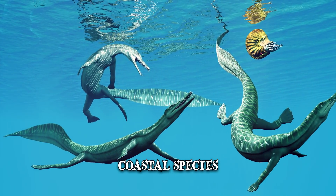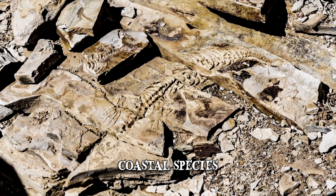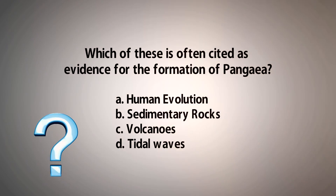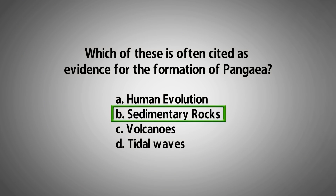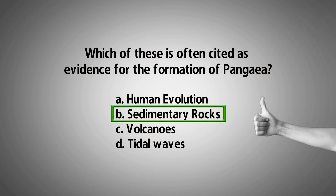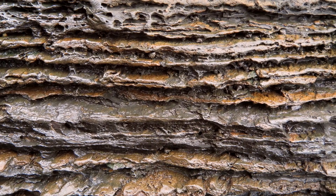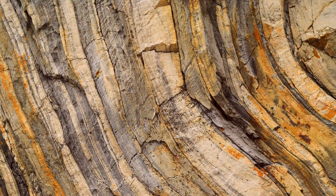Unfortunately for its flourishing species, Pangaea's existence overlapped with one of the most catastrophic events in the history of life on this planet. As for the often-cited evidence of Pangaea's formation, while a case can be made for each answer, the best fitting is B — sedimentary rocks. That's because when the rocks are formed, the magnetic minerals inside them take on the magnetic properties of the Earth, showing where the magnetic poles lie in relation to the rock. Examining their orientation has revealed how the Earth's magnetic poles have migrated through time.